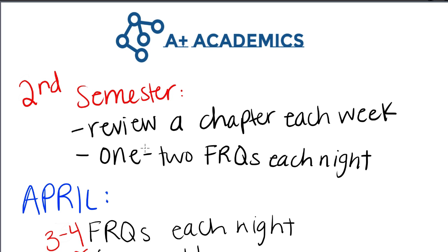Second semester, I highly suggest that you begin reviewing a chapter each week. Kind of go back and forth between data analysis, data collection, probability, and inference. You could do January data collection, then February could be data analysis, March probability, and then April inference. I suggest kind of going back and forth between a chapter each week. That way when you're in April, you don't forget data analysis and data collection.